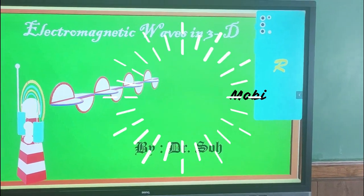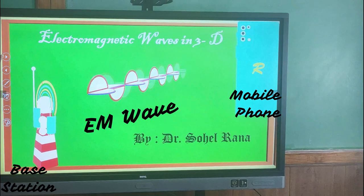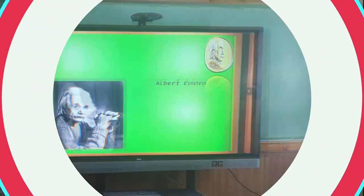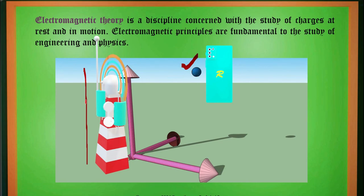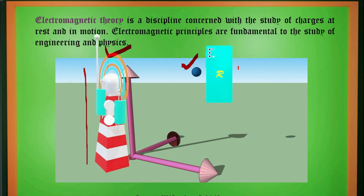Mobile phones communicate by transmitting radio waves through a network of fixed antennas called base stations. Radio frequency waves are electromagnetic fields. We have defined electromagnetic theory as the discipline where the study of charges at rest and in motion is involved. A charge is a single point. We can refer to an antenna as the source of force and charges as the destination of force.